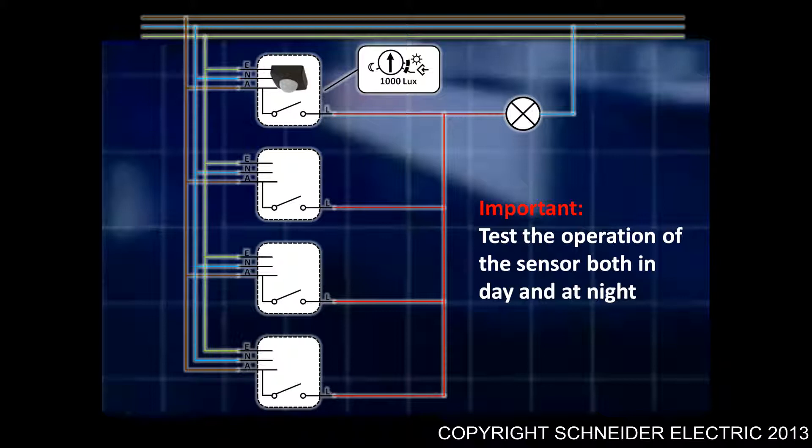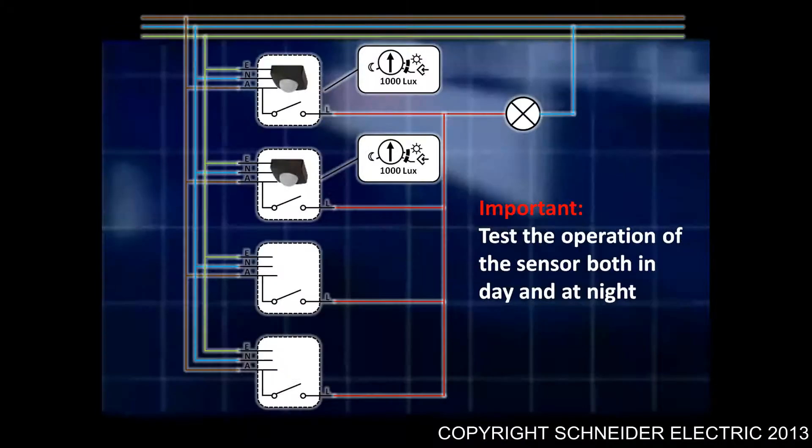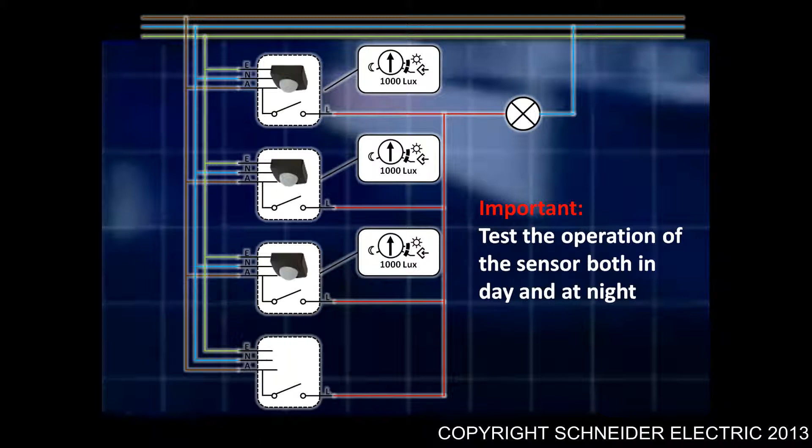What you need to do after that, and this is only once you've confirmed the operation of the first sensor, is connect up a second sensor and go through the same process. What you should find is, as you keep adding sensors, you know that every sensor you've added before should be working 100% correctly.